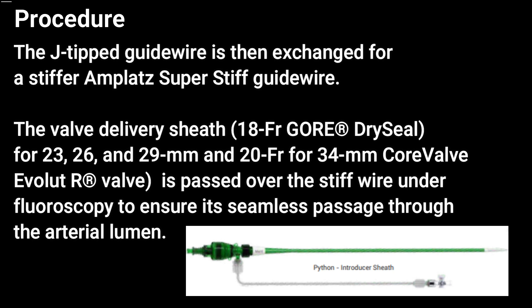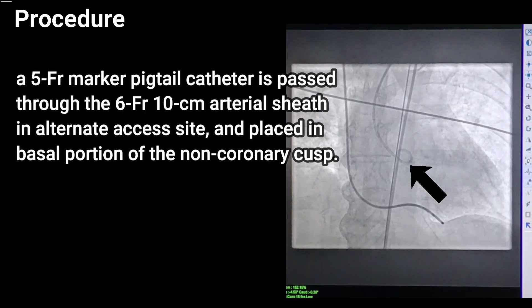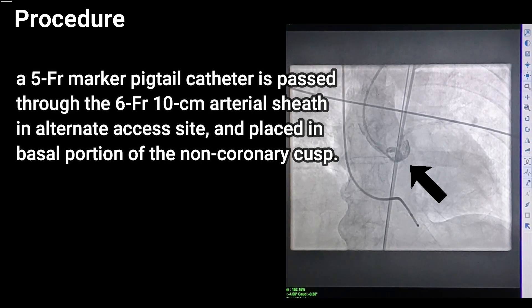Intravenous unfractionated heparin is administered to achieve activated clotting time (ACT) greater than 250 seconds. The J-tipped guide wire is then exchanged for a stiffer Amplatz Super Stiff guide wire. The valve delivery sheath — 18-French for 23, 26, and 29 mm, and 20-French for 34 mm CoreValve — is passed over the stiff wire under fluoroscopy to ensure seamless passage through the arterial lumen.